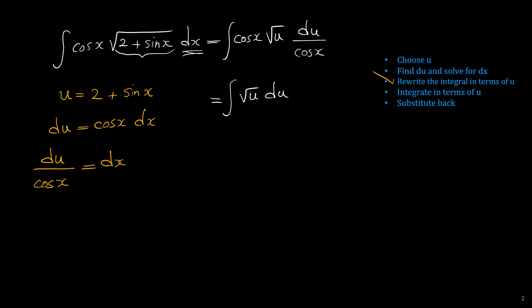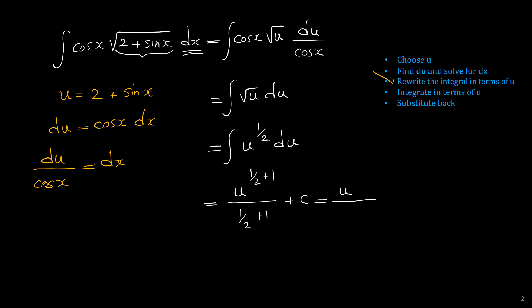We now face a simple integral: the integral of radical u du. We rewrite radical u as u to the one-half and use the power rule. This gives u to the one-half plus 1 over one-half plus 1, which equals u to the 3 over 2 all over 3 over 2. Since 1 over (3/2) equals 2/3, we can write the answer as 2 over 3 times u to the power of 3 over 2 plus c.